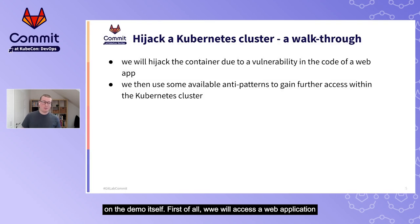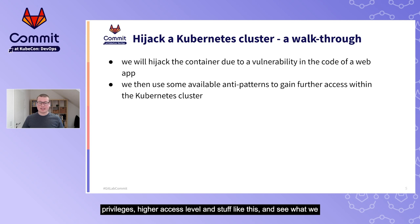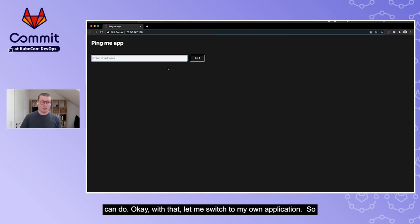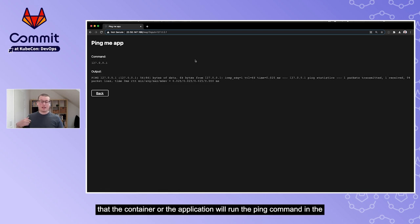Before jumping into the demo, here are some details. We will access a web application using our browser, then try to inject some code into the container, and from there gain further access into the Kubernetes cluster - getting elevated privileges and high access levels. The demo application is a small web app where you input an IP address, hit go, and it runs the ping command inside the container.